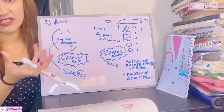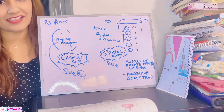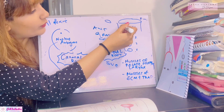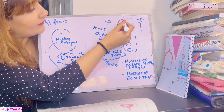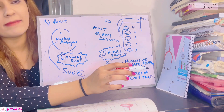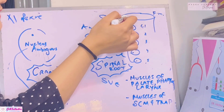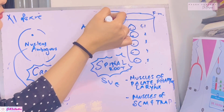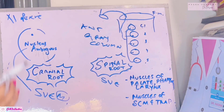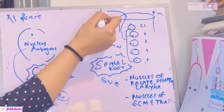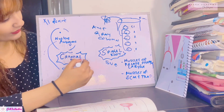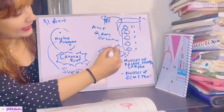The spinal root ascends within the vertebral canal to join the cranial root. It enters the cranial cavity through the foramen magnum, crosses the jugular tubercle, and reaches the jugular foramen where the cranial root is waiting. The two roots unite to become the accessory nerve.